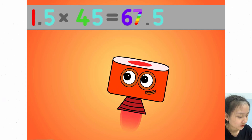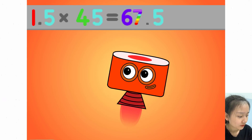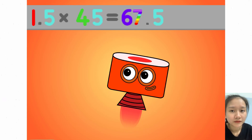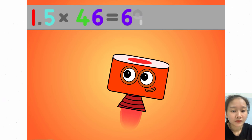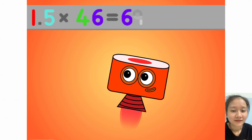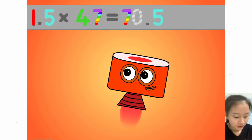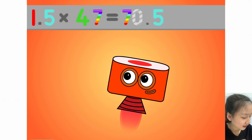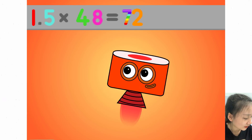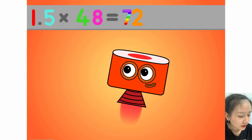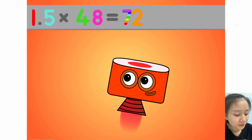1.5 times 45 equals 67.5. 1.5 times 46 equals 69. 1.5 times 47 equals 70.5. 1.5 times 48 equals 72.